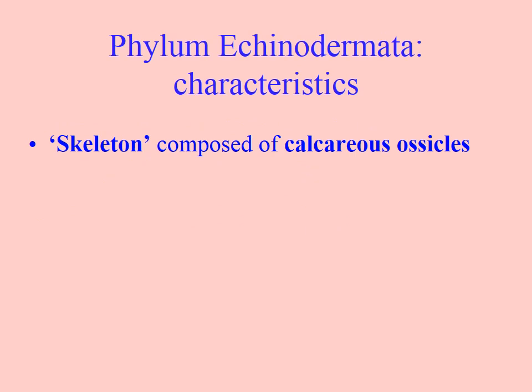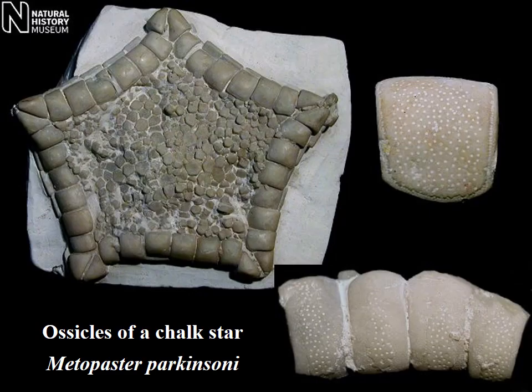They have a skeleton, which is different from ours, but it's composed of little bony segments. They're calcareous — they contain calcium carbonate, much like our bones — and these segments are called ossicles. Here is a nice picture of the skeleton of a sea star. Sea stars are flexible, so in the asteroidians, the ossicles are not fused together; they have muscle and connective tissue in between so they can move and bend.